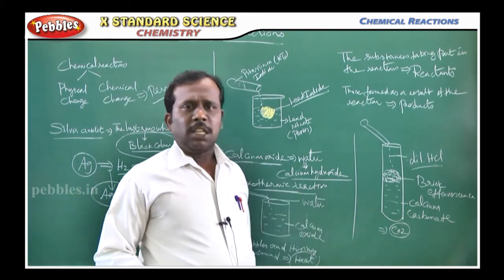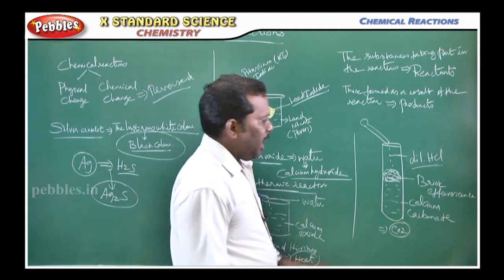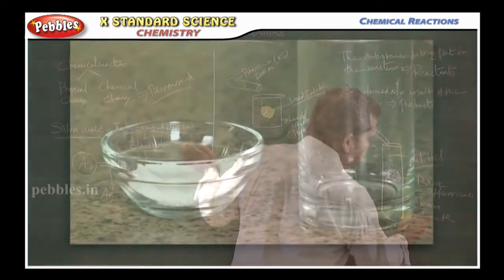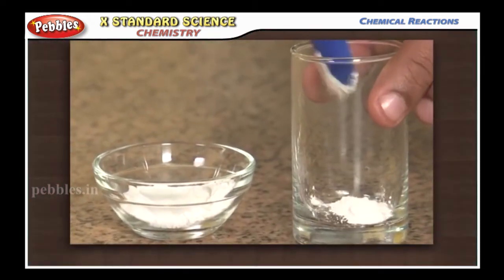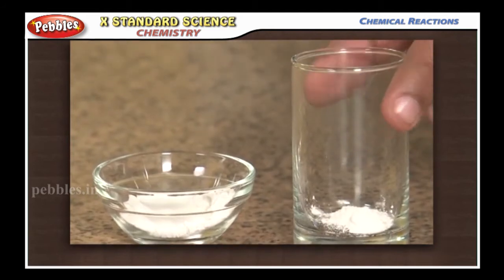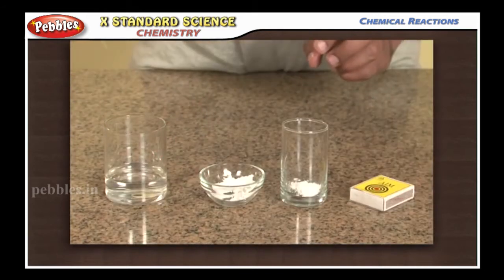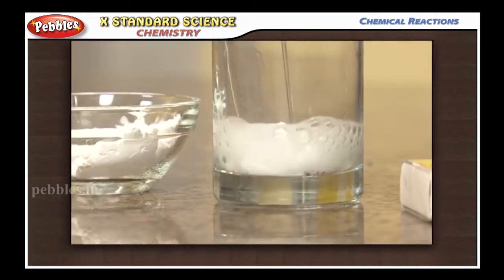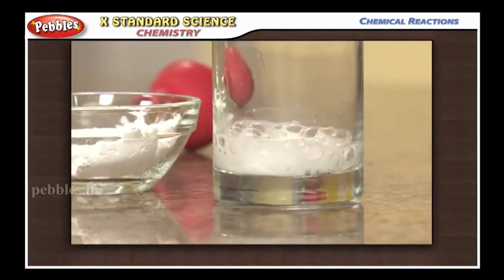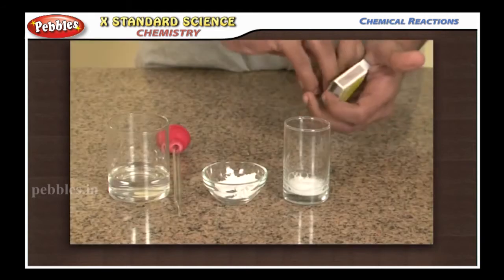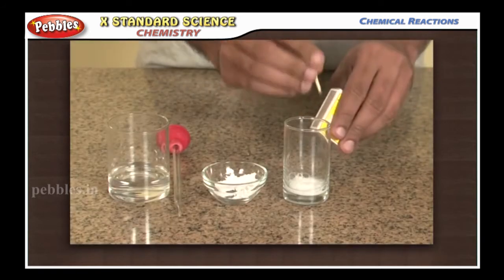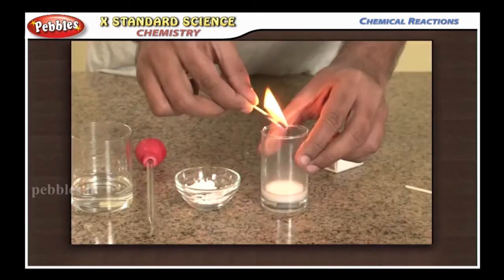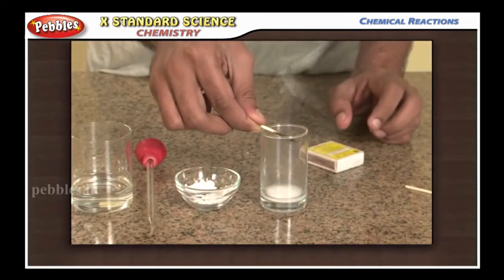Then another activity given in your textbook is, we take in a test tube the calcium carbonate powder and we added a few drops of dilute HCl, hydrochloric acid. After we added the dilute HCl in the calcium carbonate, it formed brisk effervescence and also it released carbon dioxide.